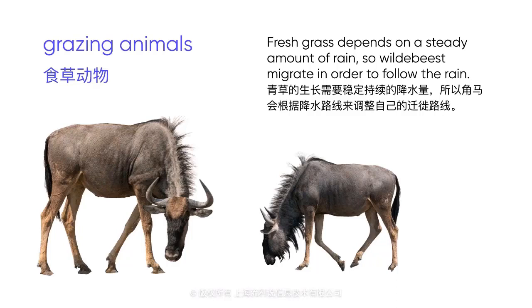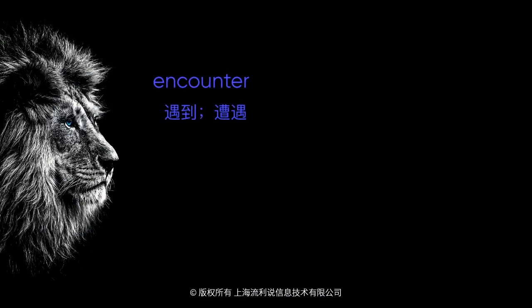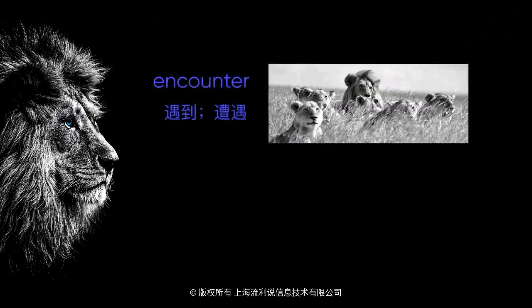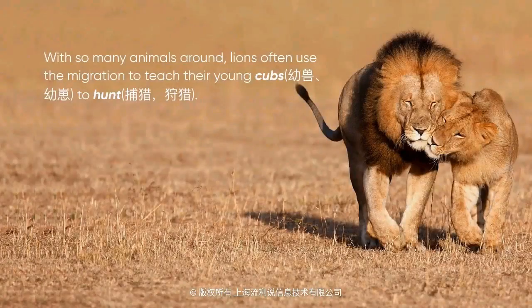Wildebeest migrate in May when the rain begins to move from south to north. Other grazing animals often join them, including zebra and gazelle. Along the way, these grazing animals will also encounter the Serengeti's many predators. The area is especially famous for its large population of lions. For these lions, the migration is almost like an all-you-can-eat restaurant. With so many animals around, lions often use the migration to teach their young cubs to hunt. But they need to take advantage of the opportunity while it lasts, because unlike wildebeest, lions do not migrate.